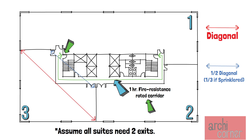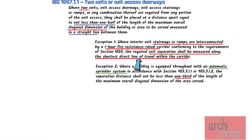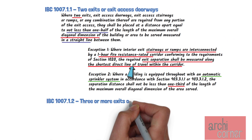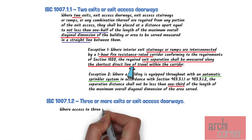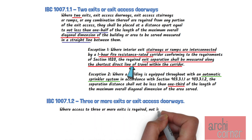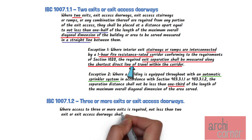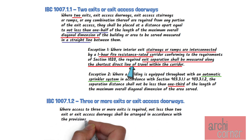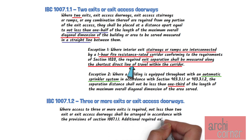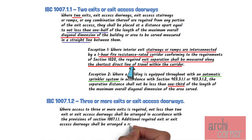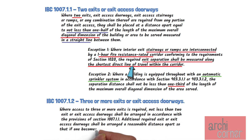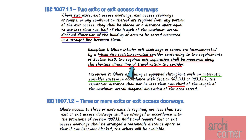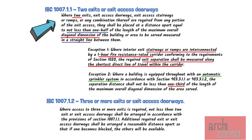What if we are required to have three exits? Going back to IBC section 1007.1.2, it states: Where access to three or more exits is required, not less than two exit or exit access doorways shall be arranged in accordance with the provisions of section 1007.1.1. Additional required exit or exit access doorways shall be arranged a reasonable distance apart so that if one becomes blocked, the others will be available. Basically, we have the same requirements as section 1007.1.1 — two doors need to comply with this.